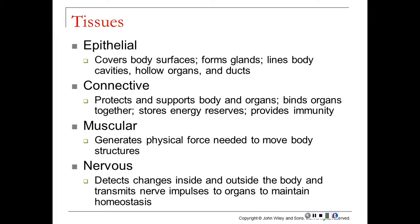Examples of connective tissue include blood, bone, tendons, ligaments, and adipose tissue. Muscular tissue generates the force for movement — you automatically think of biceps and quadriceps, and that's correct, but there are other places muscles exist in the body. The final type is nervous tissue, which provides information about the external environment, responds to changes, and directs major body processes to maintain homeostasis.